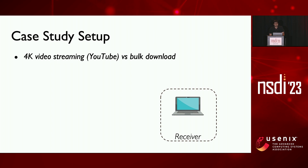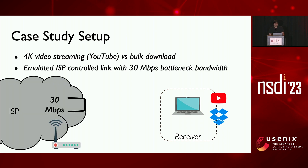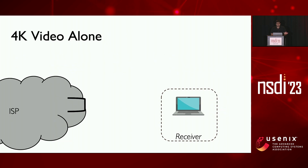To highlight the problem and explain Crab's working, I'll discuss the case study of 4K video streaming in the presence of bulk download. We present results from real YouTube videos and bulk transfer over the internet. We started a YouTube video on a laptop and measured video quality using YouTube's API, and also started a backlogged bulk download flow. We emulated an ISP-controlled access link with a bottleneck bandwidth of 30 Mbps at the home router using Linux TC.